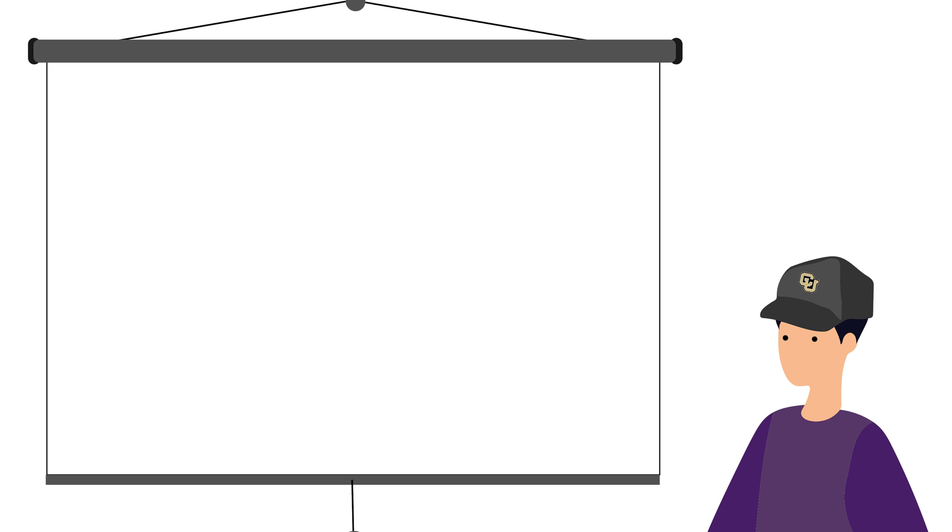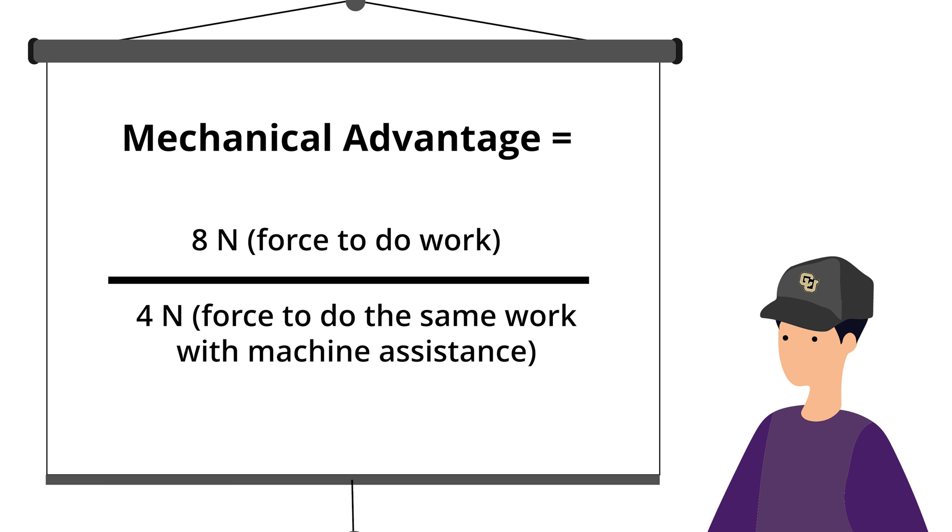The mechanical advantage of the inclined plane is the force to do the work divided by the force to do the same work with the assistance of a machine. So, the mechanical advantage is 2.